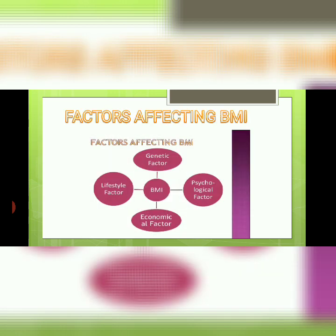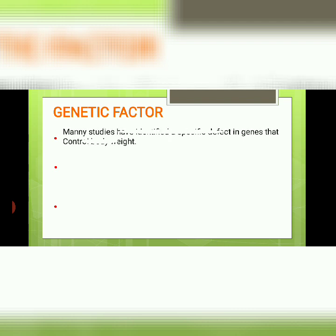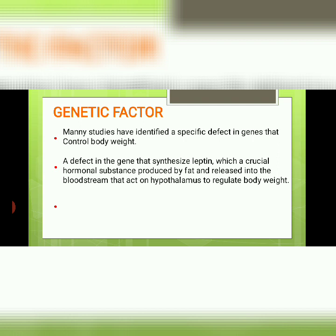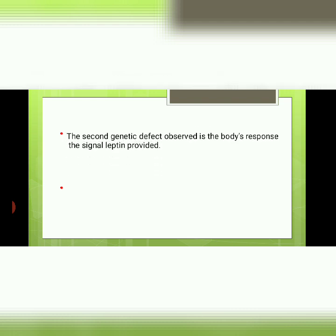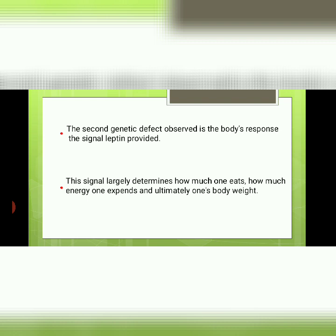Factors affecting BMI — first, the genetic factor. Many studies have identified specific defects in genes that control body weight. A defect in genes that synthesize leptin, a crucial hormonal system, produces the fat released into the bloodstream that acts on the hypothalamus to regulate body weight. Congenital absence of leptin produces continual hunger and marked obesity in children. A second genetic defect affects the body's response to the signal leptin provides, which largely determines how much one eats, how much energy one expends, and ultimately one's body weight.